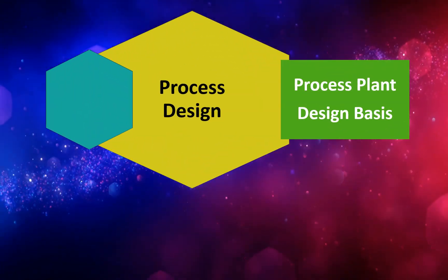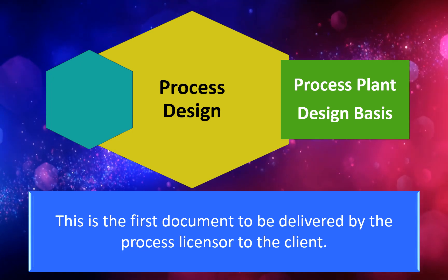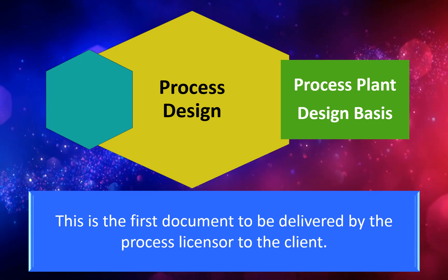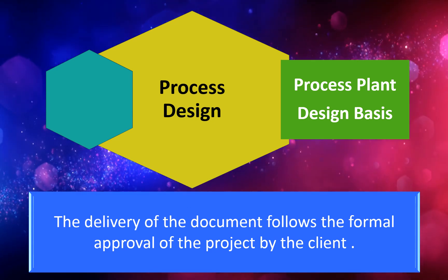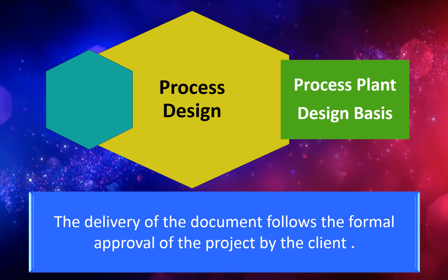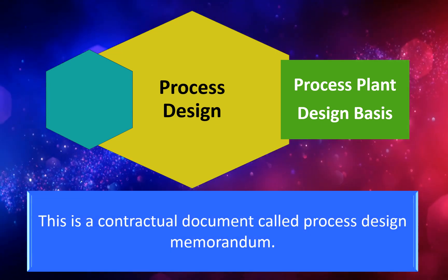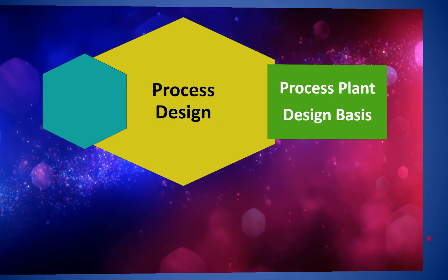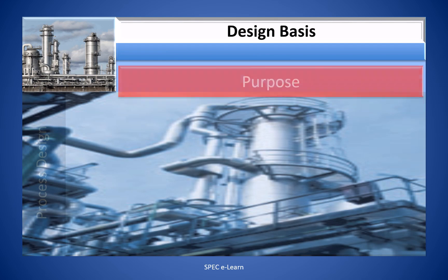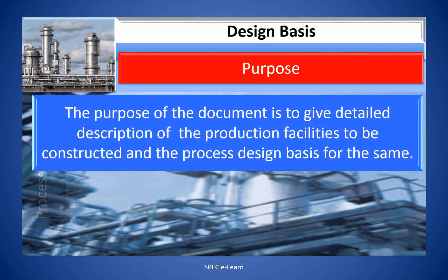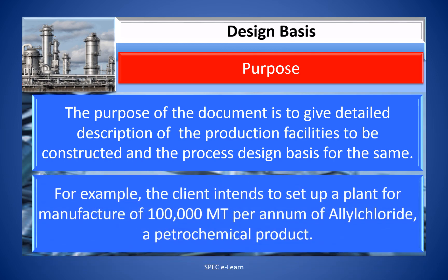The process plant design basis is the first document to be delivered by the process licensor to the client. The delivery of the document follows the formal approval of the project by the client. This is a contractual document called the process design memorandum. For example, the client industry sets up a plant for manufacture of 100,000 MT per annum of allyl chloride, a petrochemical product.